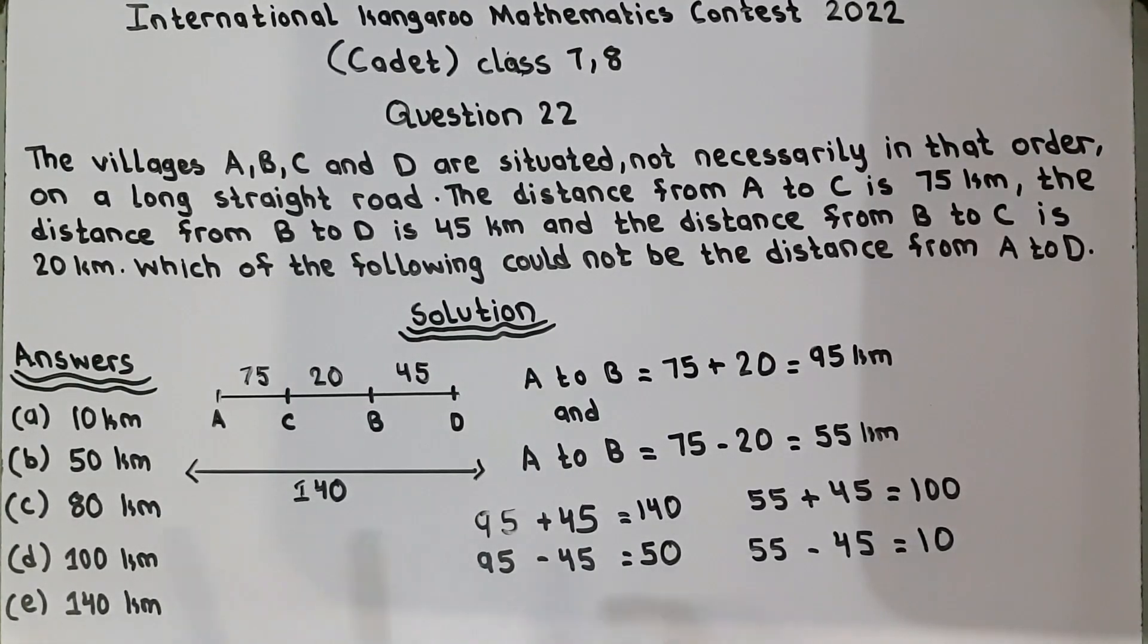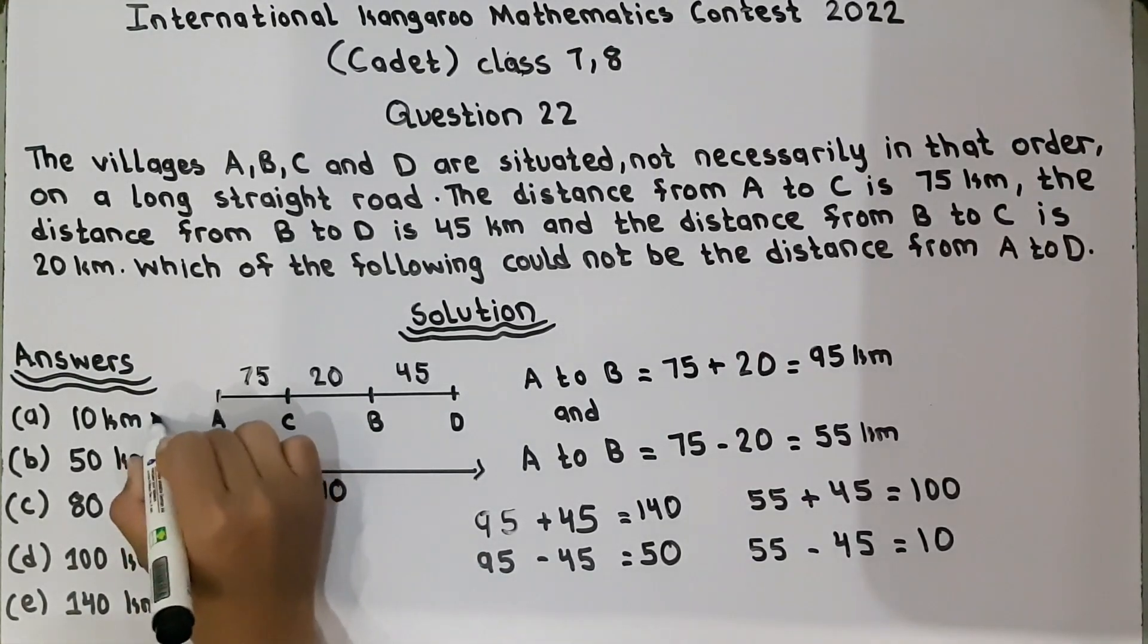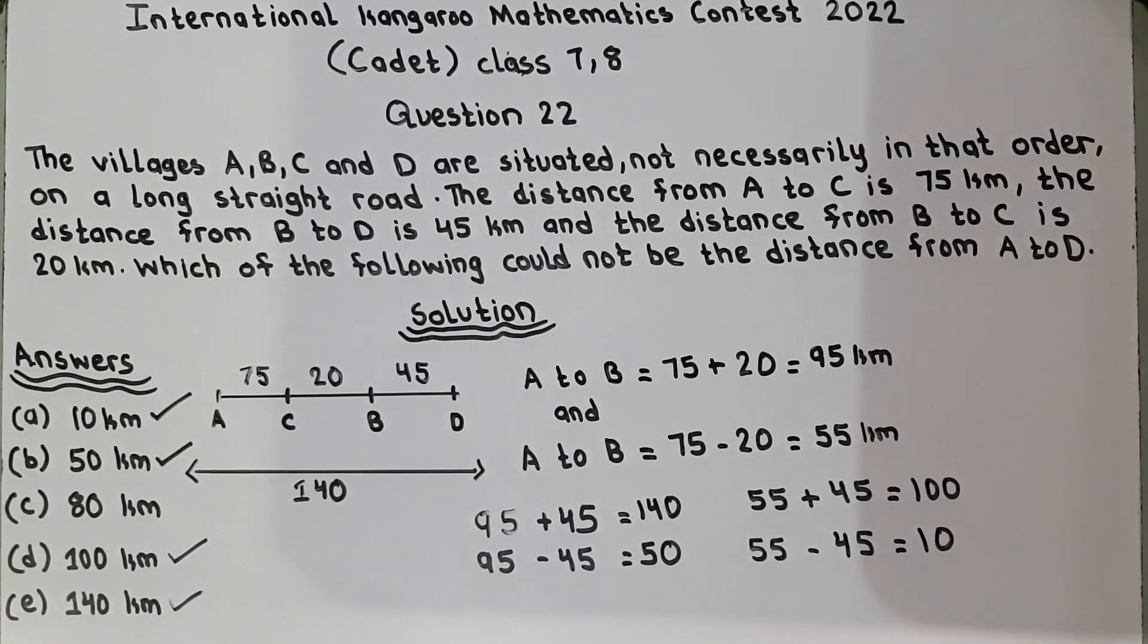So, the answers are these: 140 is here, this is the distance. 100, here is 100, this is also the distance. 50, here is 50, this is also the distance. And 10, 10 is also the distance. So, left is 80 kilometers. And 80 kilometers is not the distance from A to D. So, this is our answer.